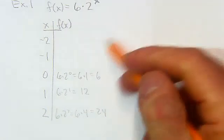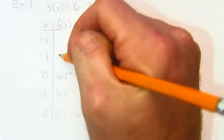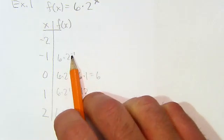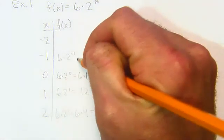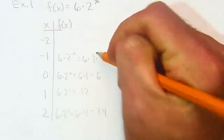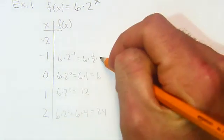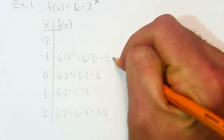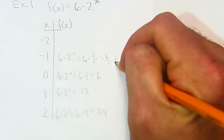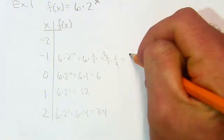If you go backwards here, 6 times 2 to the negative 1. Remember, 2 to the negative 1 meant flip it over. It really means 1 over 2 to the 1, or 1 over 2, so really it's 6 times a half. If you cross cancel there, you're really just down to 3 and 1. So really it's just 3.